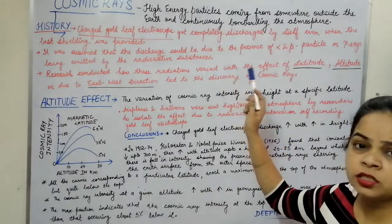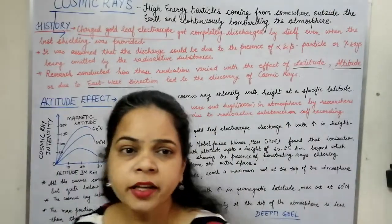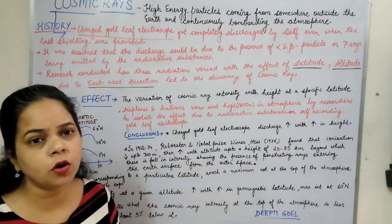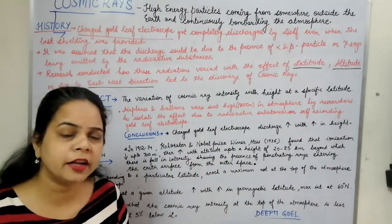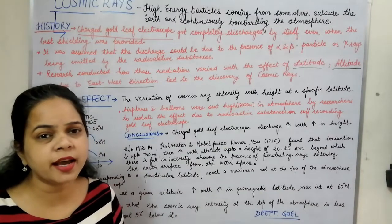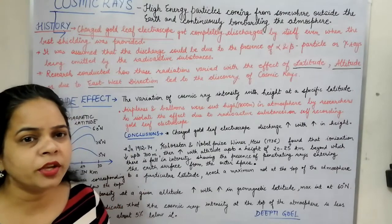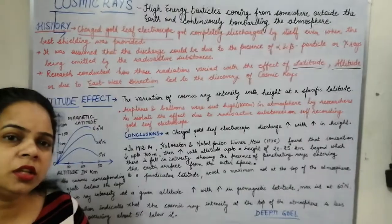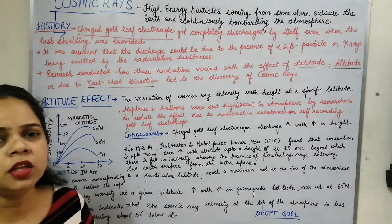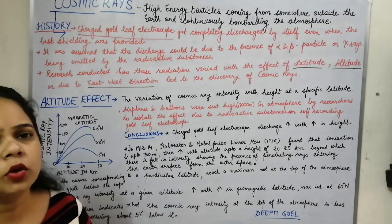Since the radiations were coming from outside the Earth, it was decided to study the effect of altitude, the effect of latitude, and the effect of the east-west direction, which was named the azimuth effect. We shall now take into consideration the altitude effect and also learn the history behind the discovery of cosmic rays.